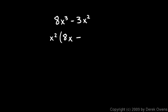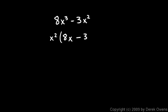This next one will be easier. We multiply x squared by what to give us 3x squared? Well, clearly we have to multiply it by 3. And you can check by distributing: x squared times 8x gives us 8x cubed, and x squared times 3 will give us 3x squared.